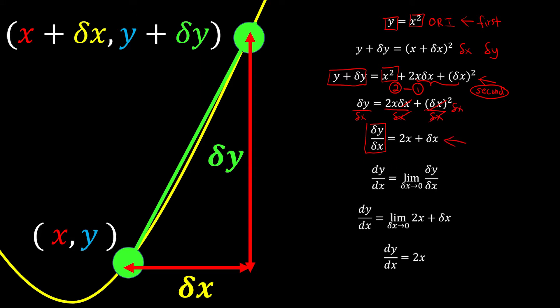But we know that delta x is not good enough — we want to try to be as close to 0 as possible. This is why we use the limit. So when delta x approaches 0, we are left with only 2x. So we can say that the gradient of the specific point is 2x.